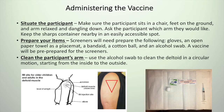Now with the shoulder exposed, locate the acromion process — two fingers below should be the ideal injection site. Grab your alcohol swab and from the middle to the outside, swab in a circular motion. Allow the site to dry and then you can administer the vaccine.